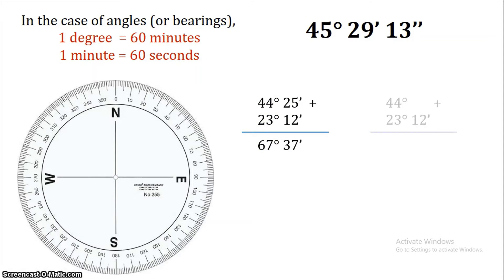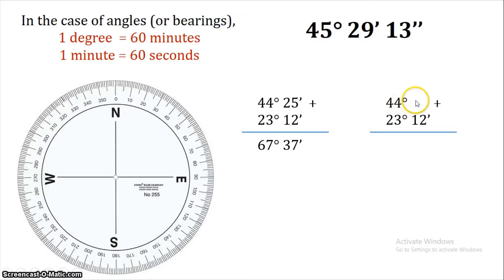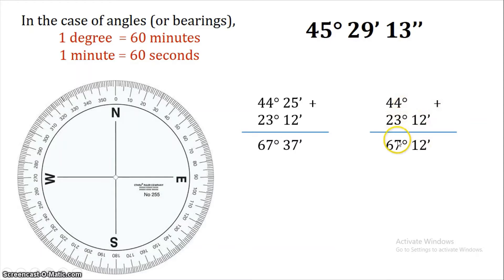The third case is 44 degrees plus 23 degrees 12 minutes. There is no minute value in 44 degrees, so we treat it as 0 minutes. The answer is: 0 plus 12 is 12 minutes, then 4 plus 3 is 7, 4 plus 2 is 6, giving 67 degrees 12 minutes.